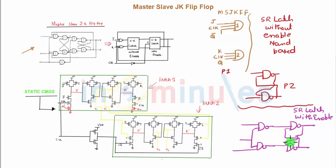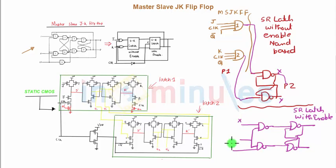Let's understand how these connect. This is my first stage, and the output of my first stage will go to my second stage input — let's call this X and this Y. So this is connected to X and Y. When you draw these three together, you get the full gate level diagram: the first stage here, the second stage here, and the final stage here. There's nothing to mug up — it's all clear understanding.